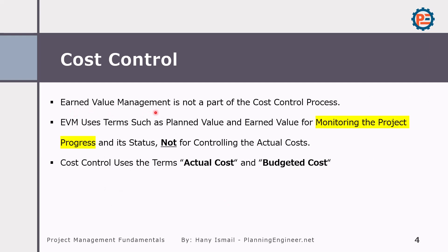Earned value management, or EVM, is not part of the cost control process, and this is something confusing a lot of us. Because we use earned value management terms such as planned value and earned value for monitoring the project progress only — this is not cost control. In cost control, we are dealing with actual costs and budget costs.